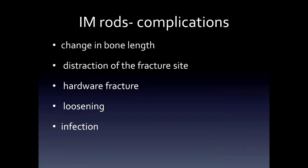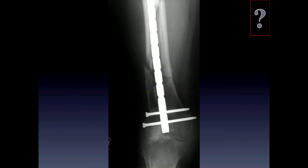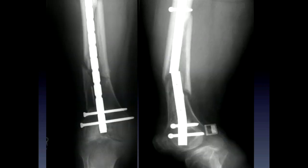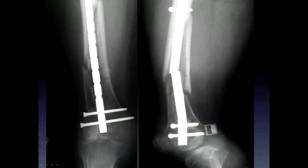Complications of intramedullary rods include change in bone length, distraction of the fracture fragments, hardware fracture, loosening, or infection. On the frontal radiograph of an intramedullary rod you may not see anything wrong, but on the lateral view you can easily see the disruption in the rod — so always remember to get two views.